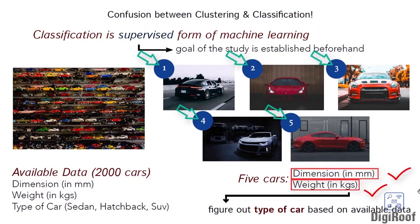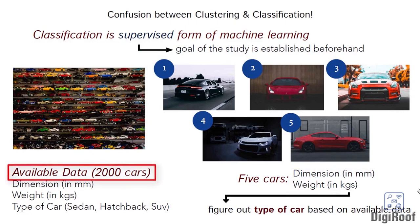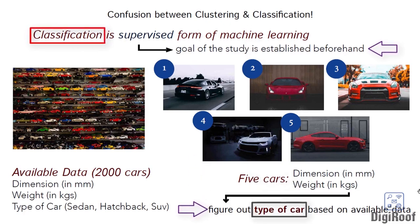Now, suppose data of 5 cars is given minus the information for the type of car. Based on the existing data of 2000 cars, you need to figure out the type of these 5 cars — whether they are sedan, hatchbacks, or SUVs. Such analysis comes under classification, i.e. supervised learning, because the objective of data analysis is known beforehand, which is to figure out the type of car.